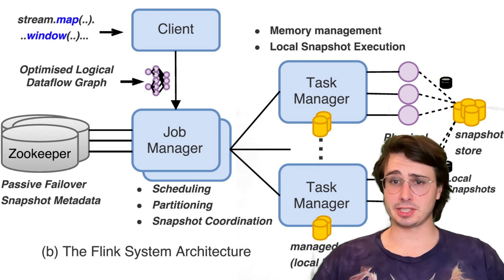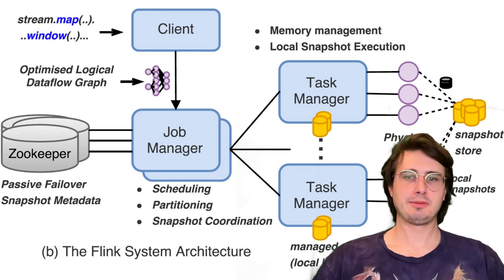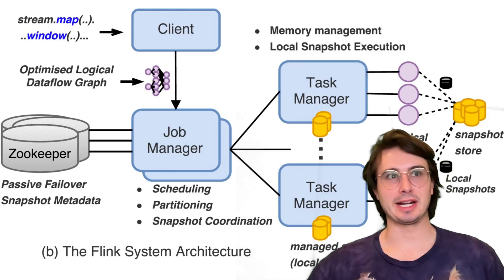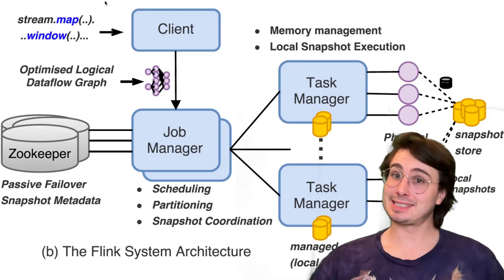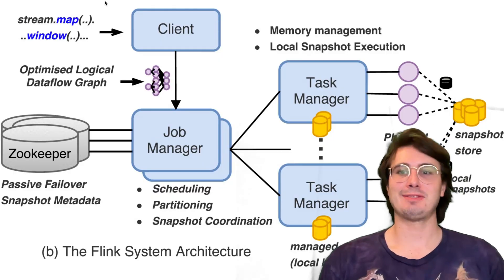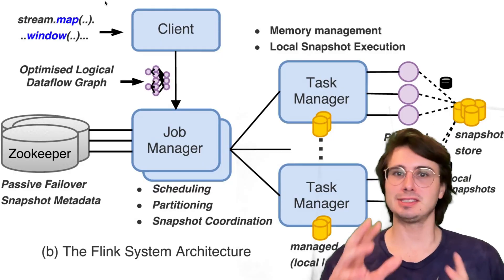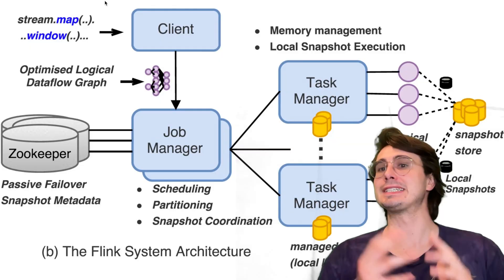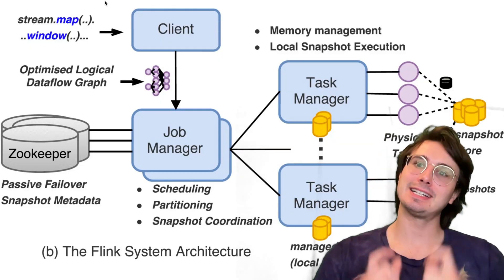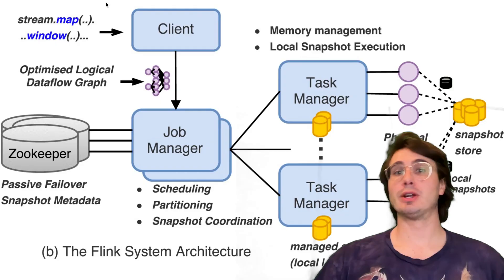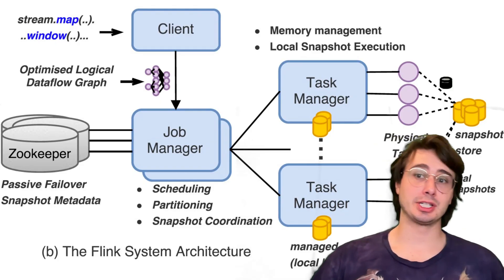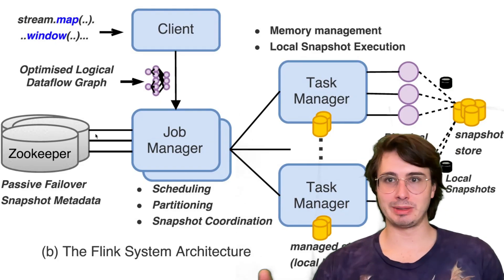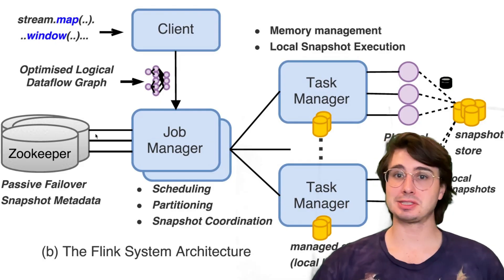Next, I want to talk about state management best practices, because that's key for streaming processing applications. State management ensures you're only processing each piece of data once. You've also got to make sure you're choosing the right state backend for application performance and scalability, because there are a few different options.